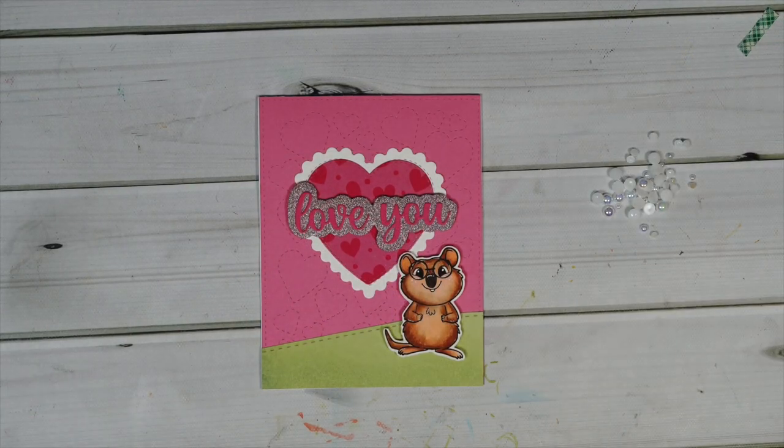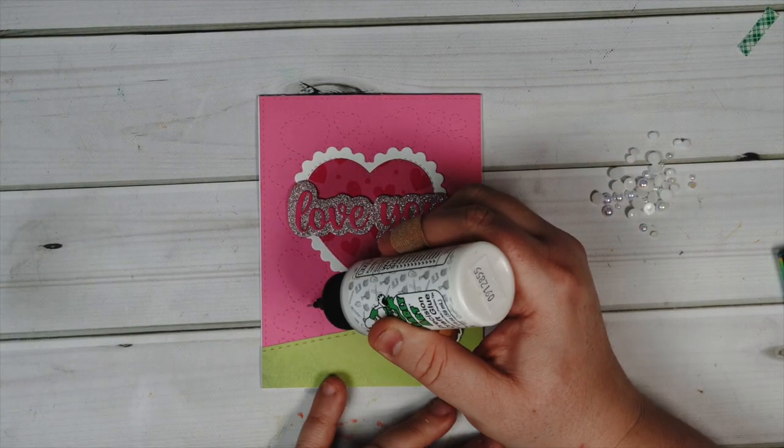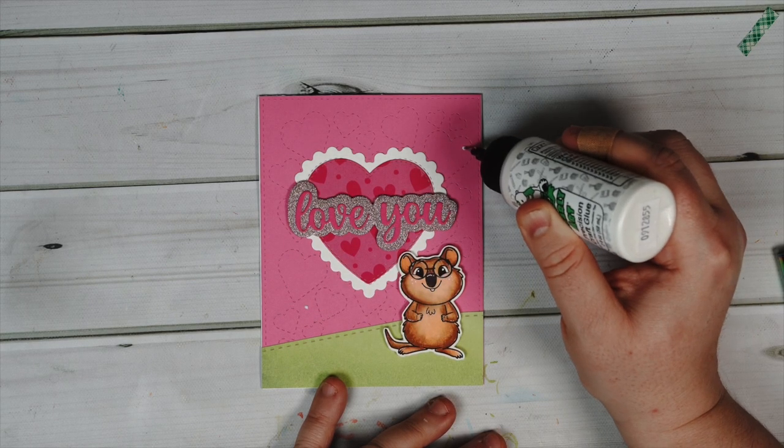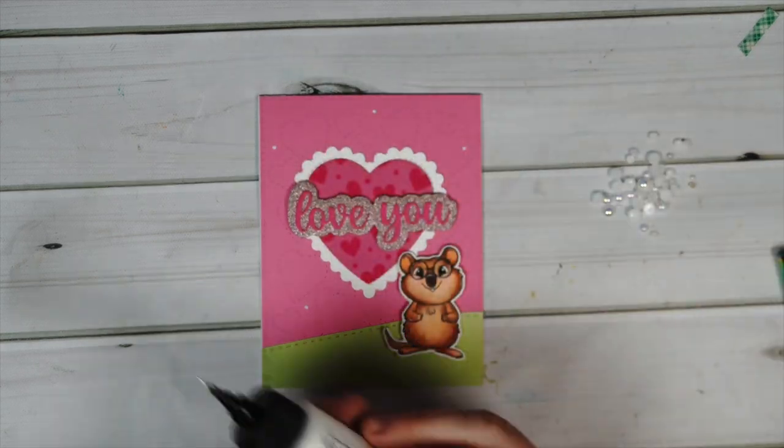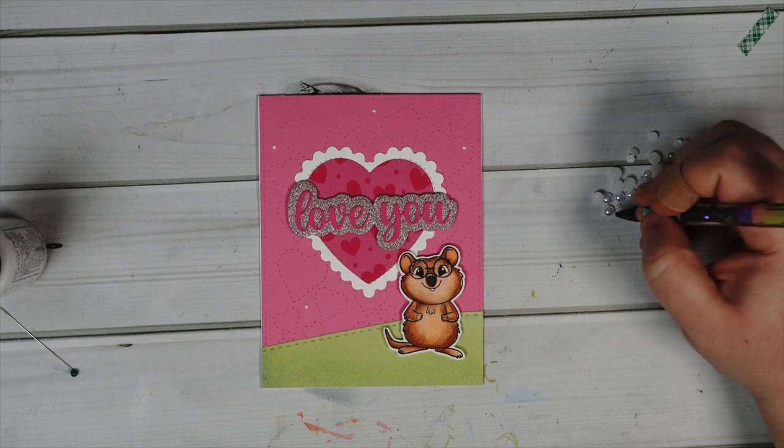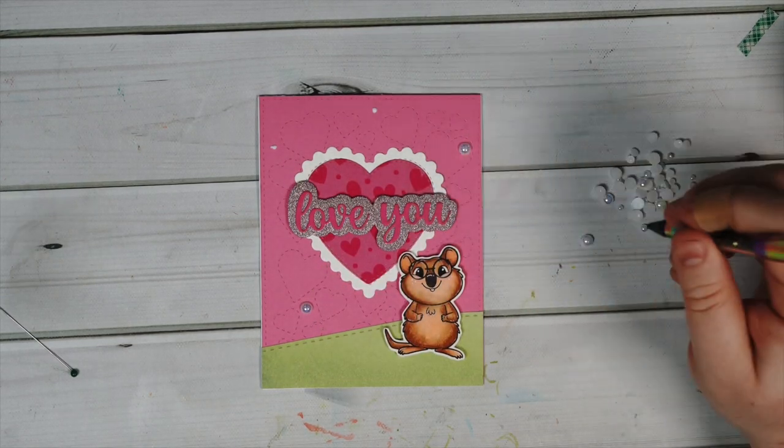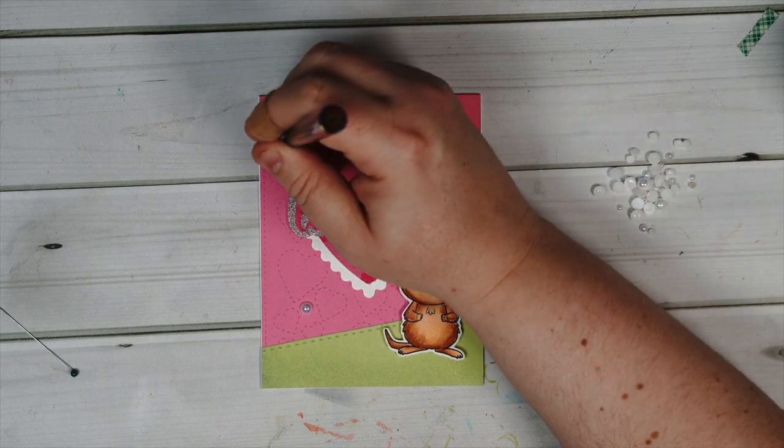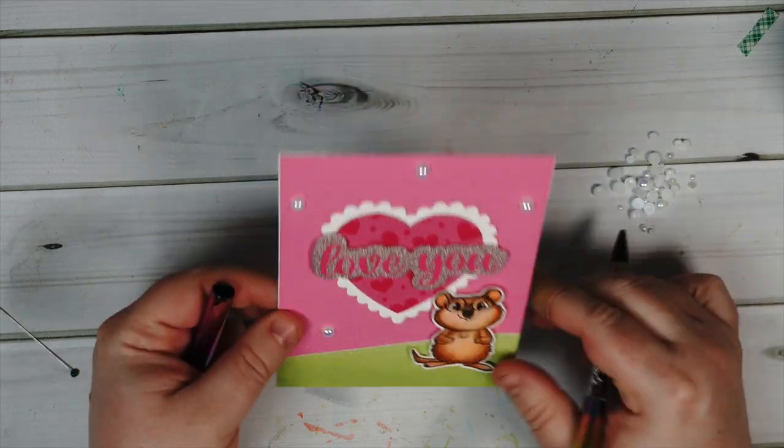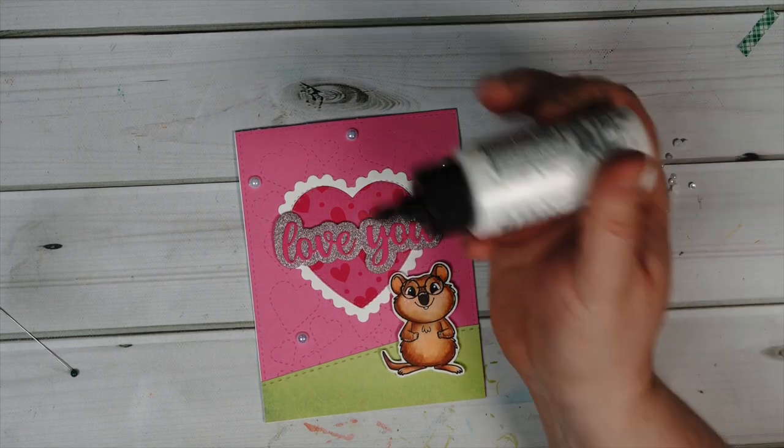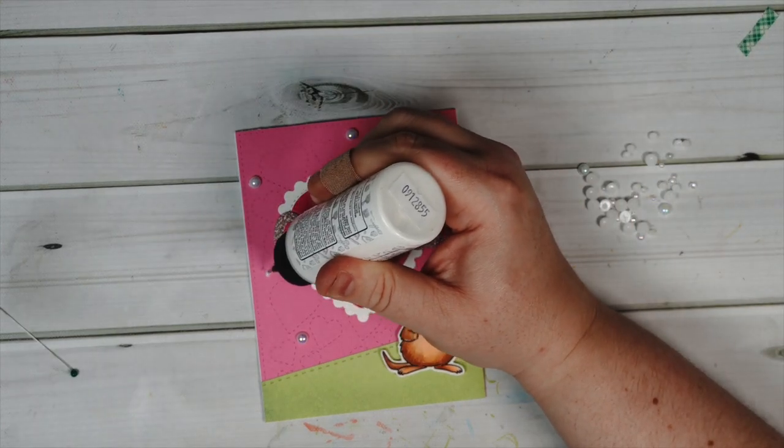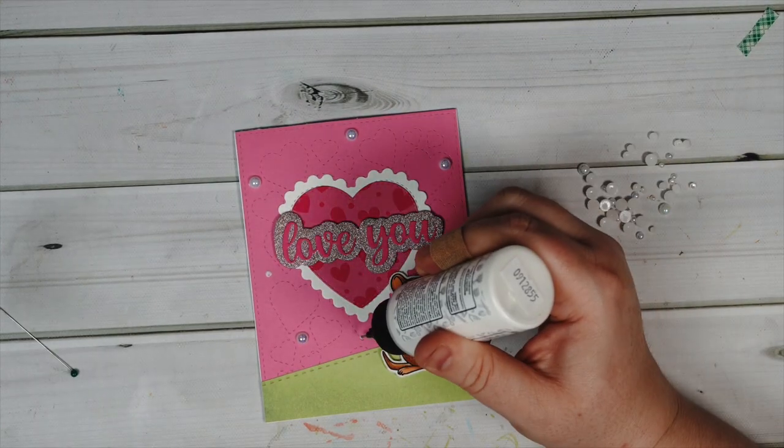For some embellishment along the background I went in with some of this pretty pearl mix in the color sparkling snow. This color is beautiful. It has a really pretty white color but when the light hits it it does shine and pick up little colors like a pink tone or a blue tone. It has kind of that pearl look to it and it also goes great with all the pinks.